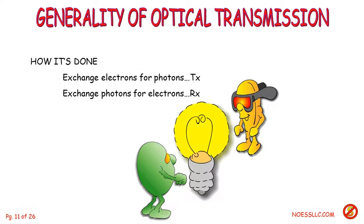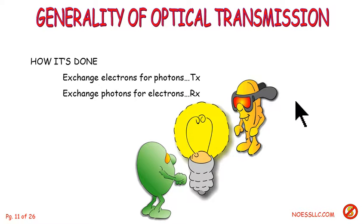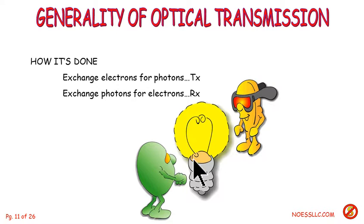What is the generality of optical transmission? This really tends to torque off my high-tech friends, but basically it's a light bulb and a photo detector at the other end. So what we do is take electronics and turn them into photonics — we pulse a light on and off, and at the other end we count the pulses with a detector. Coming back in, pulses of light get picked up by a photo detector and turned back into electronics.